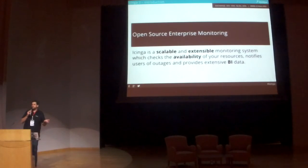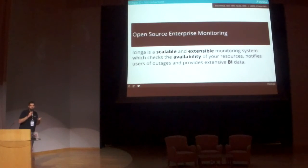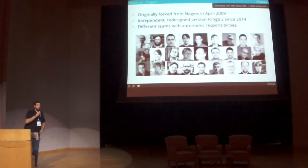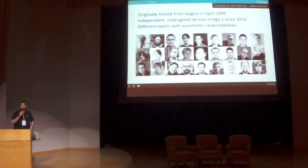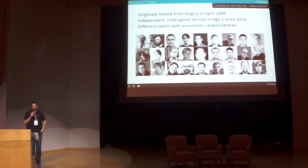What Icinga is: Icinga is an open source monitoring solution. It focuses on monitoring, on alerting, on gathering BI data for performance, for capacity planning and stuff like that. Originally we forked Icinga out of Nagios version 3 in 2009. We took the code base from there but since a couple of years we totally developed our independent core which is Icinga 2, which is production ready since June last year.